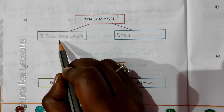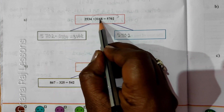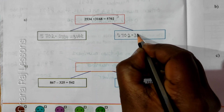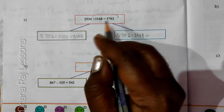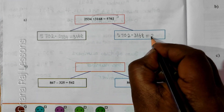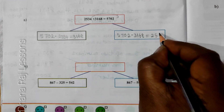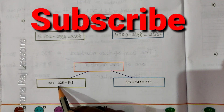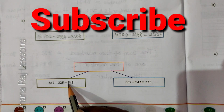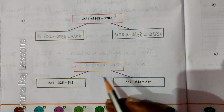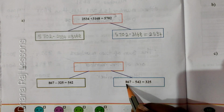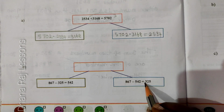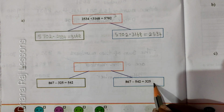Now, first we will do this; next we will do this. 2534 plus 3168 equal to 5702. Minus: 3168 equal to — answer: 2534. 867 minus 325 equal to 542. Here, 867 minus 542 equal to 325.